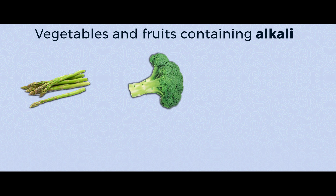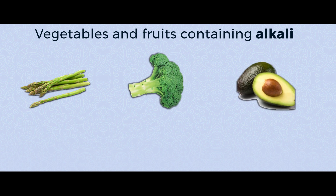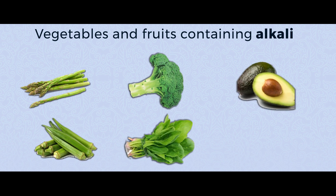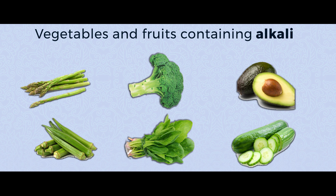Some vegetables and fruits contain alkali. Especially fruits and vegetables which are green in color have a lot of alkali in them — for example asparagus, broccoli, avocado, okra, spinach, and cucumber. They are rich in alkali.